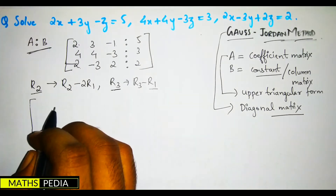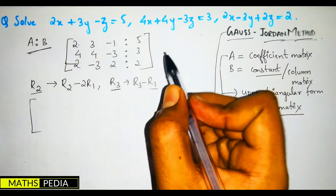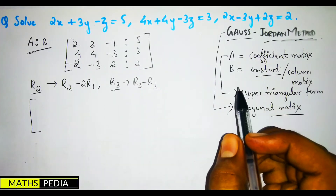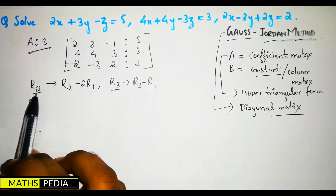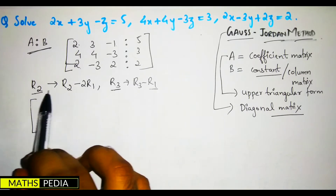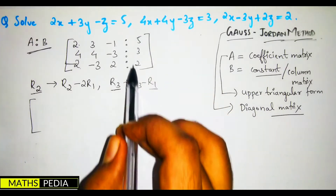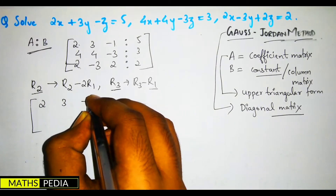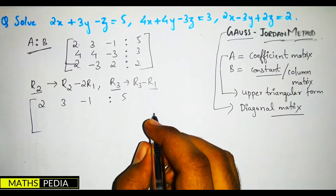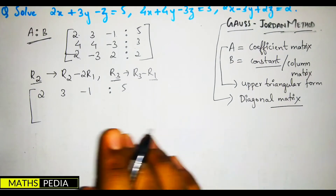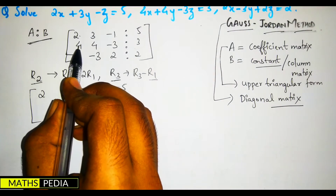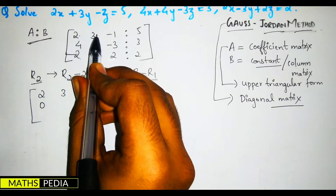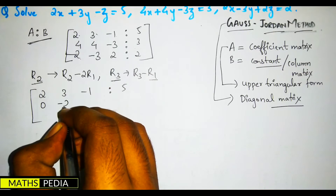Remember that these operations also affect the B column. The first row remains the same: [2, 3, -1 | 5]. Then we apply the row operations to update the second and third rows accordingly.